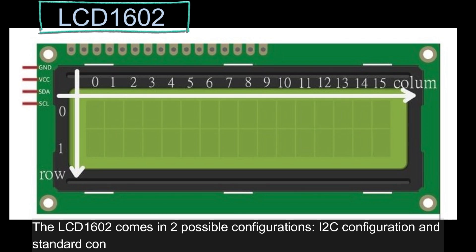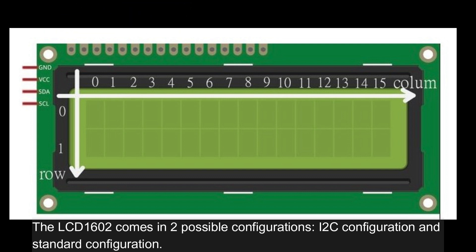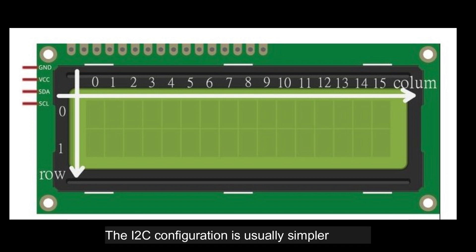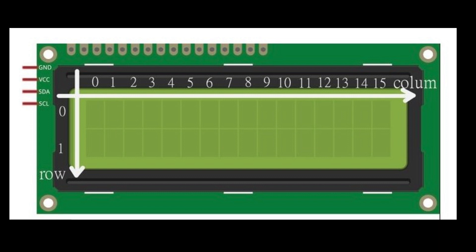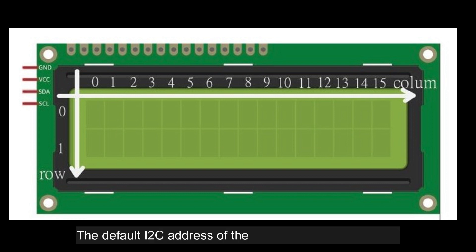The LCD-1602 comes in two possible configurations: I2C configuration and standard configuration. The I2C configuration is usually simpler to use. The default I2C address of the LCD-1602 module is 0x27.